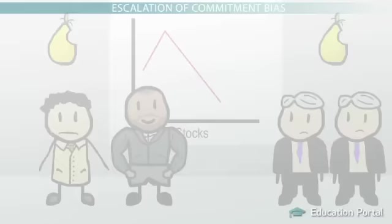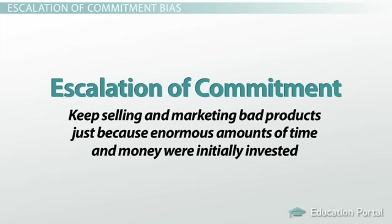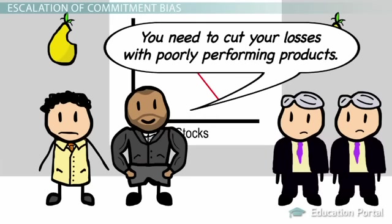There was one more bias the consultant found. One of Pair Products' biggest mistakes was constantly having an escalation of commitment to failing product lines. Pair Products would keep selling and marketing bad products just because enormous amounts of time and money were initially invested. The consultant found that the company needed to cut their losses with poorly performing products.